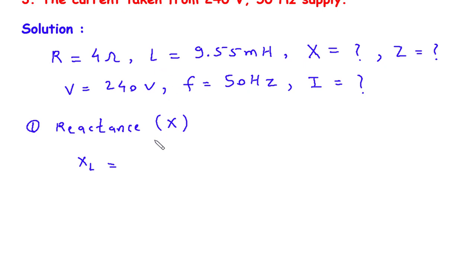And XL is equal to 2πfL. So this will be 2π multiplied by f, frequency, and its value is 50Hz, multiplied by L. L is inductance and it is 9.55 mH, so we have to multiply this with 10 to the power minus 3.